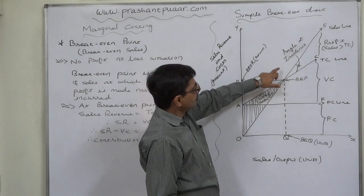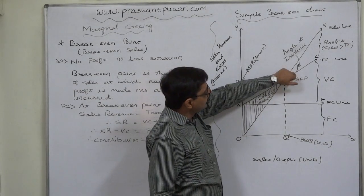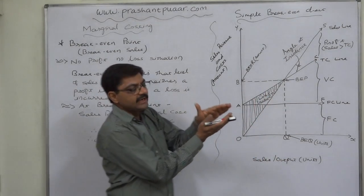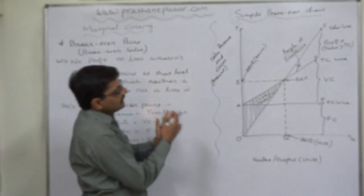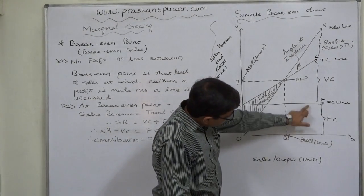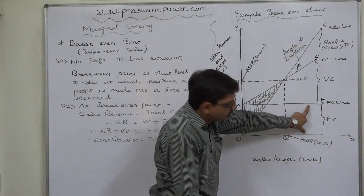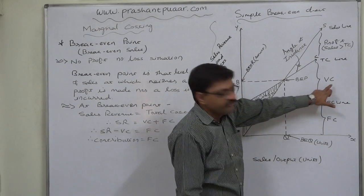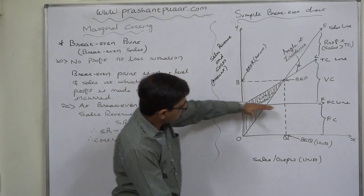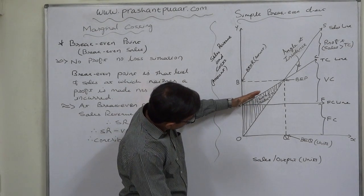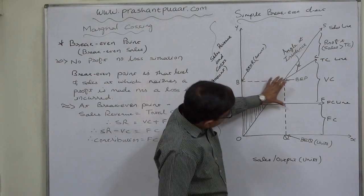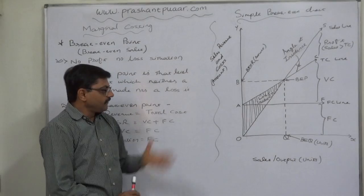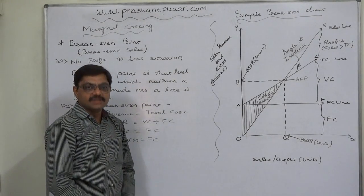In break-even analysis, the angle formed at the intersection is known as the angle of incidence. The broader the angle of incidence, the higher the profit; the narrower the angle of incidence, the lower the profit. The gap between the X axis and the fixed cost line F shows the amount of fixed cost. The gap between the total cost line and the fixed cost line is variable cost, which is zero at the origin but gradually increases with increasing sales. That in a nutshell is the concept of break-even point and the presentation of a simple break-even chart. Thank you.